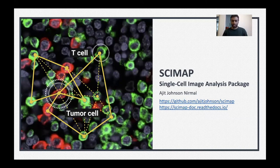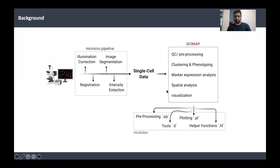Good morning, everyone. My name is Ajit Johnson, and I'll be talking about Scimap, which is essentially a package to do image analysis. So we are going to go to this part of the chart here. Scimap is used for a variety of data analysis — everything from QC, clustering, and phenotyping the cells, to marker expression analysis.